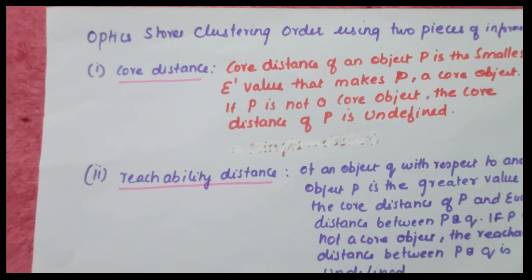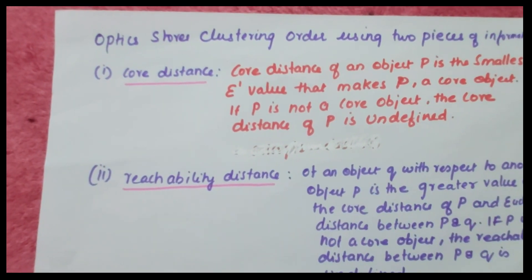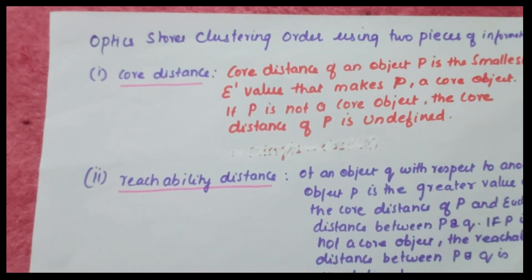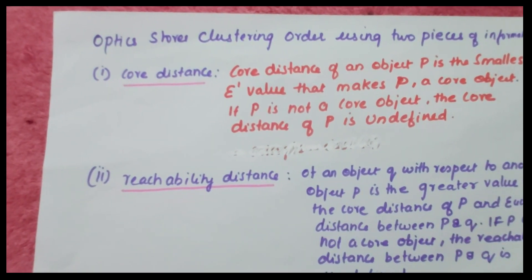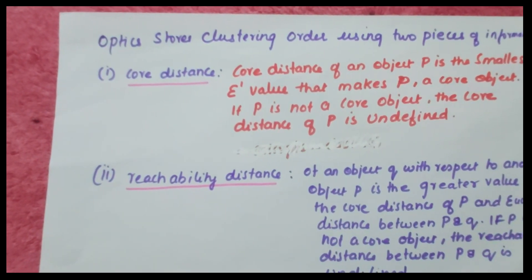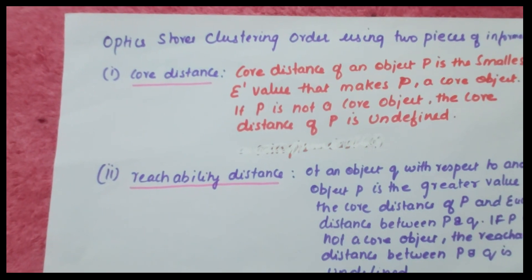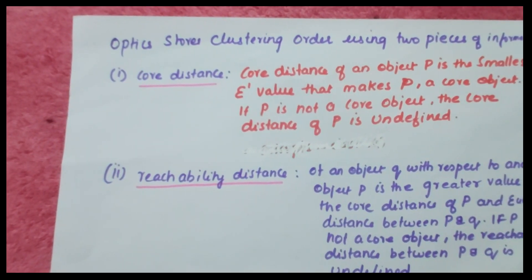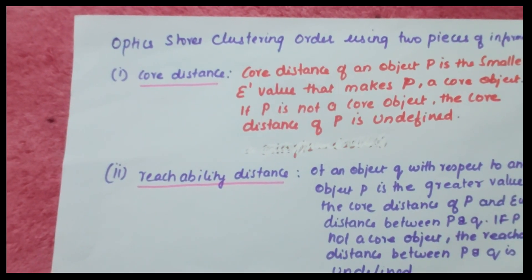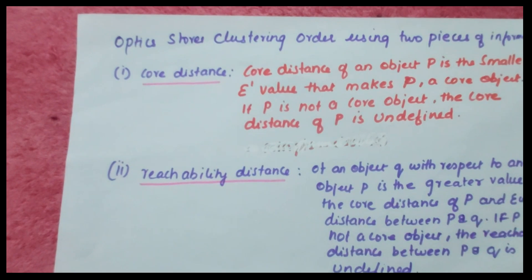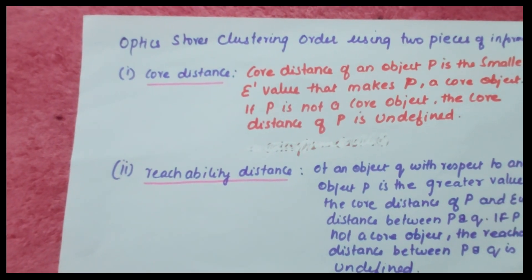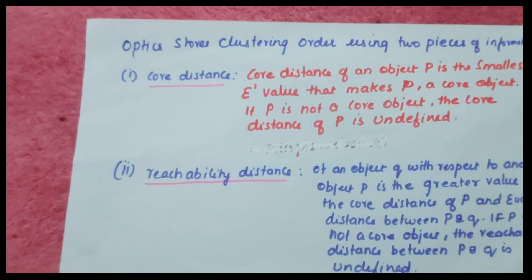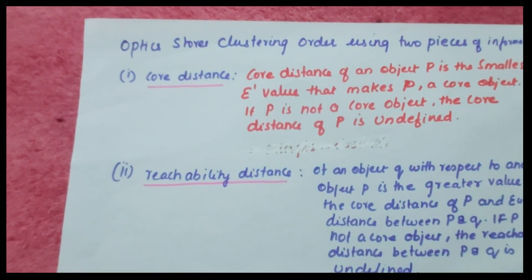This is achieved by storing clustering information using two pieces of information. The first is core distance: the core distance of an object p is the smallest epsilon value that makes p a core object. If p is not a core object, the core distance of p remains undefined.